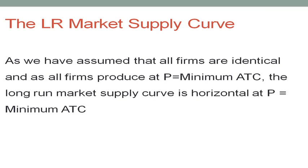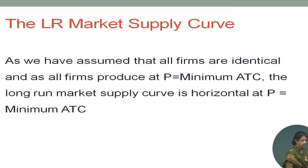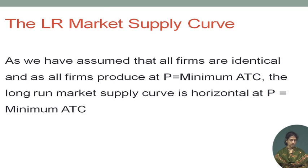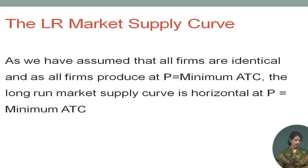The long run market supply curve — as we have assumed that all firms are identical and all firms produce at price equals minimum average total cost — the long run market supply curve is horizontal at price equal to minimum average total cost.